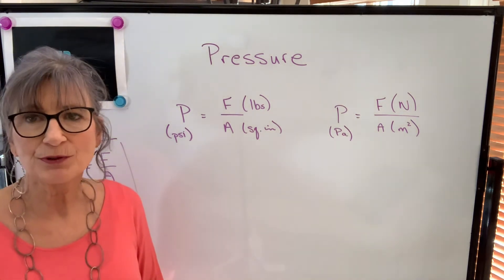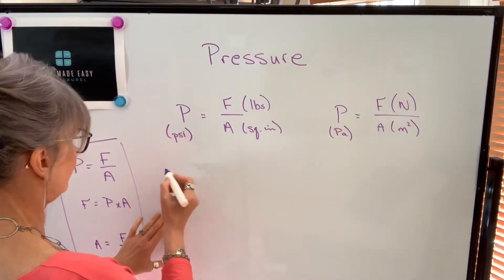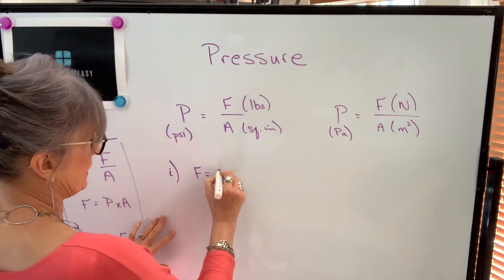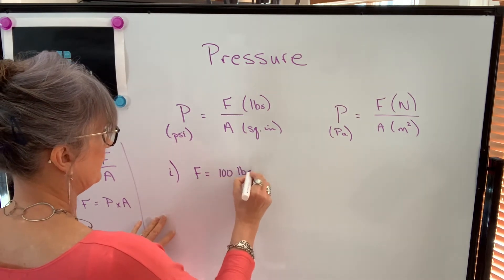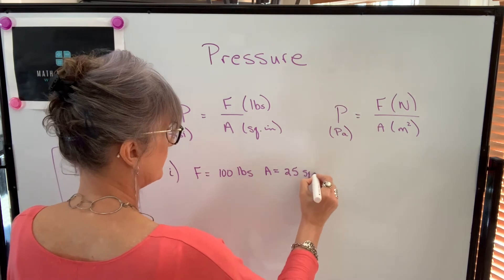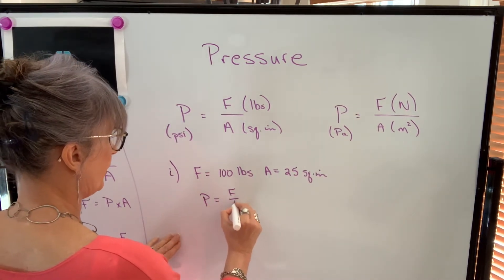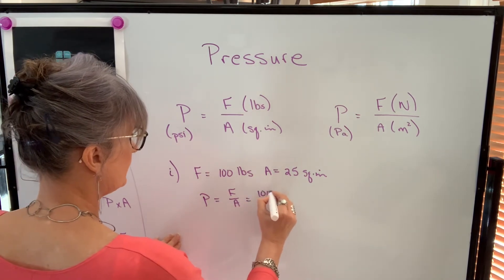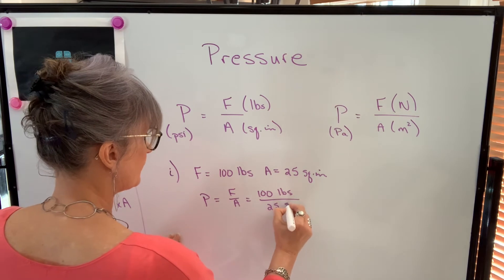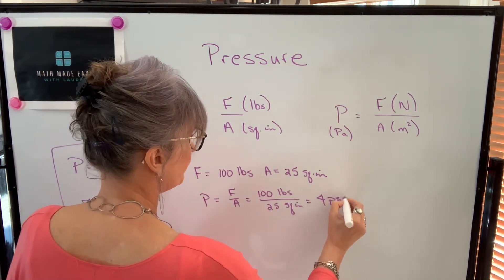Let's do a couple of examples, one where we'll find pressure and one where we'll find force. So if you know that the force is 100 pounds and the area is 25 square inches, pressure, which is equal to force over area, will be 100 pounds over 25 square inches, which is 4 pounds per square inch. That's all.